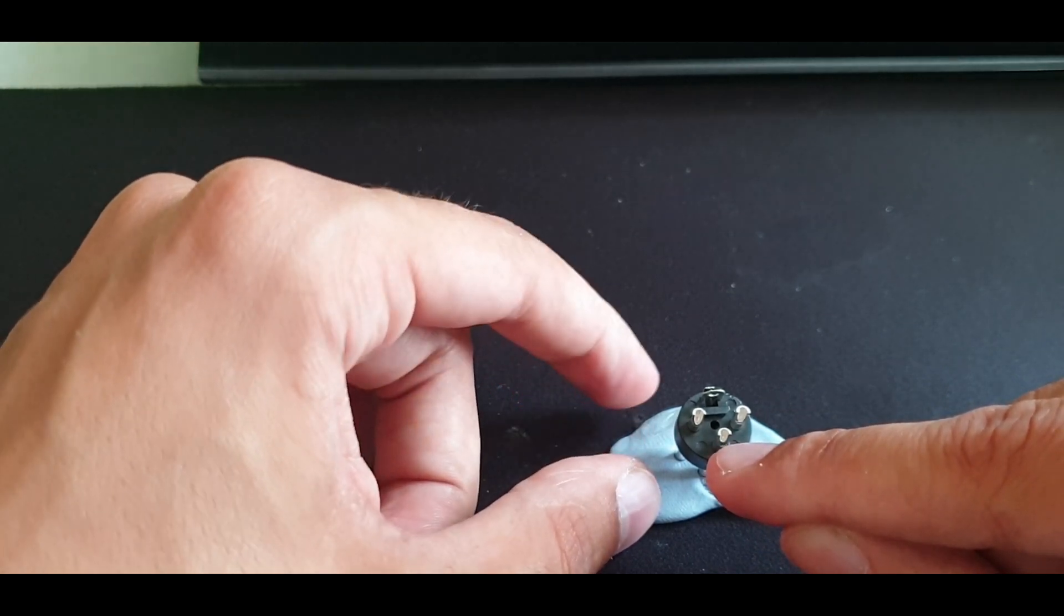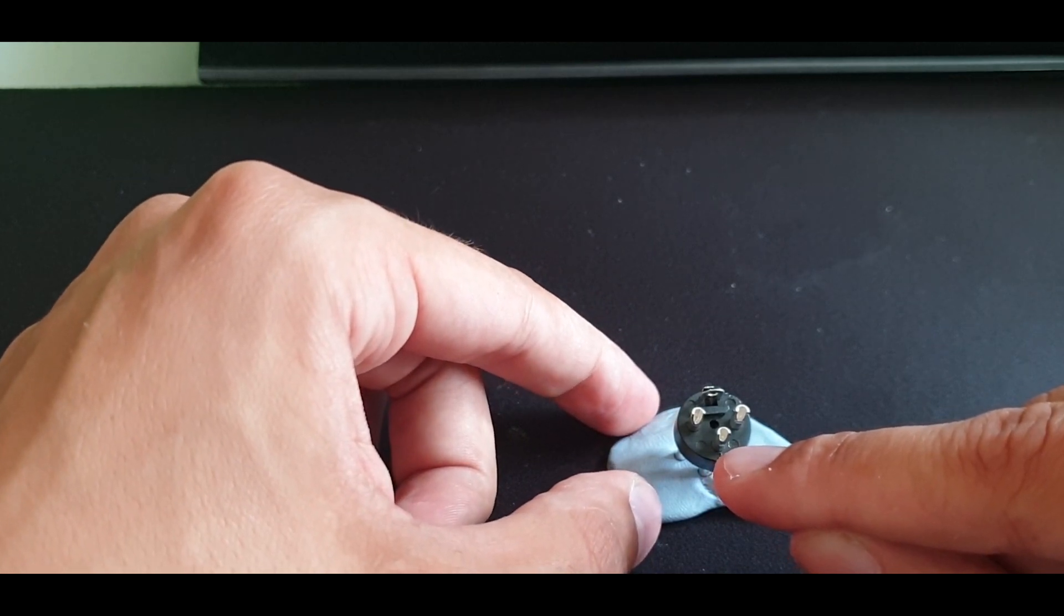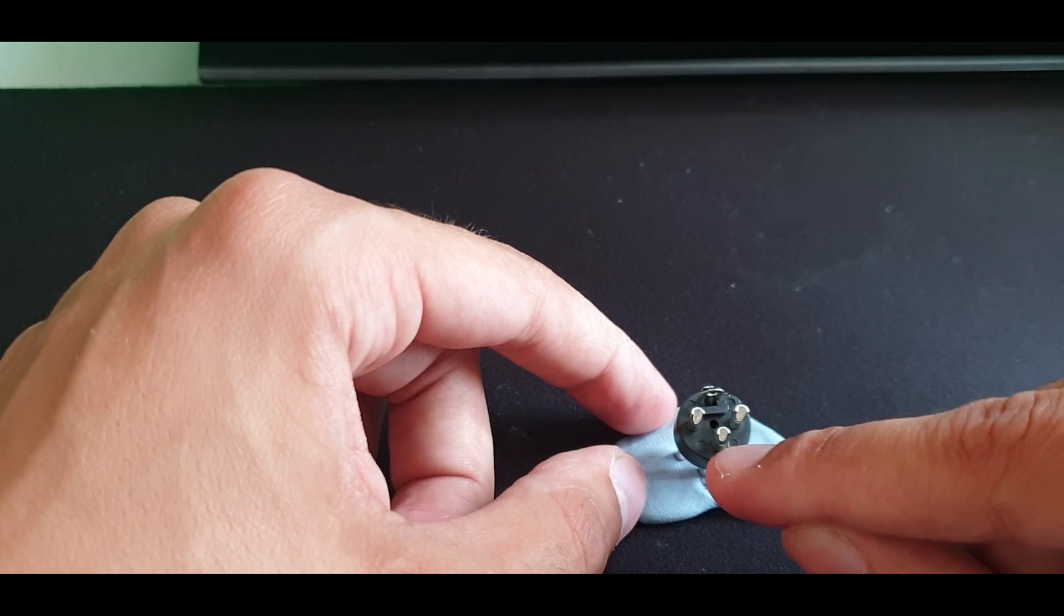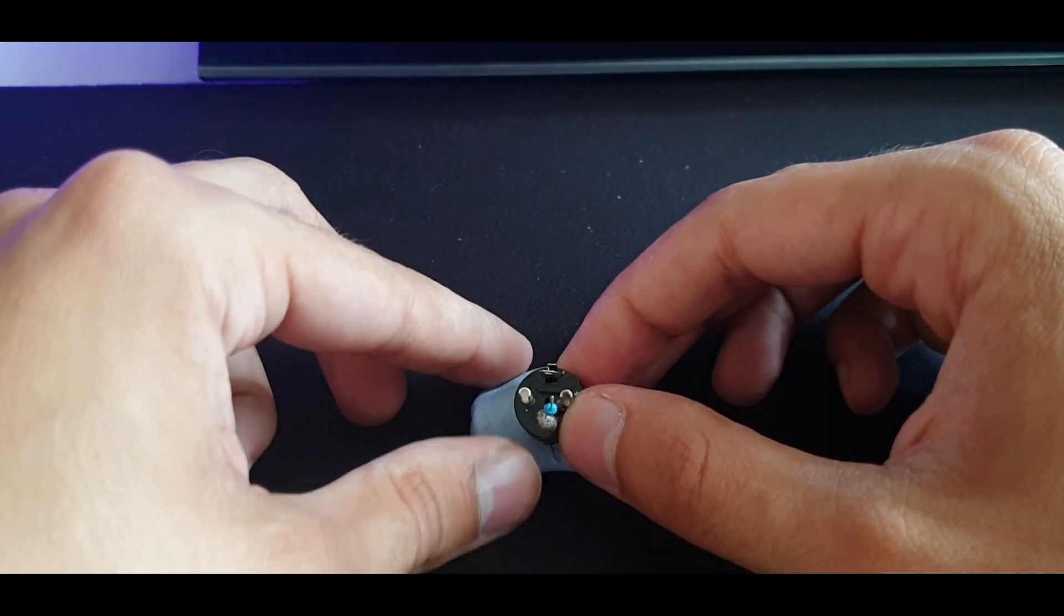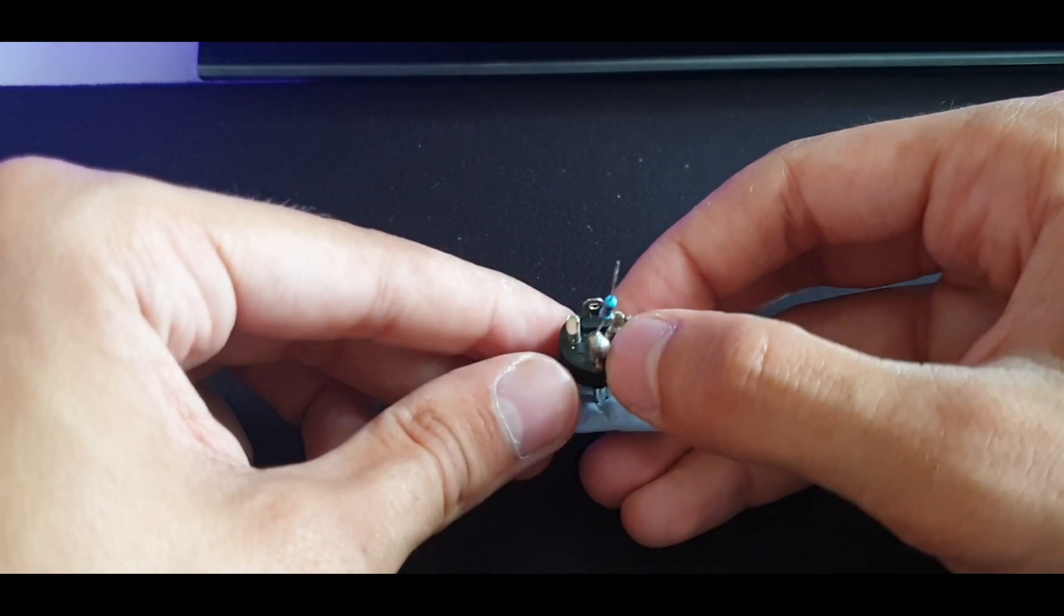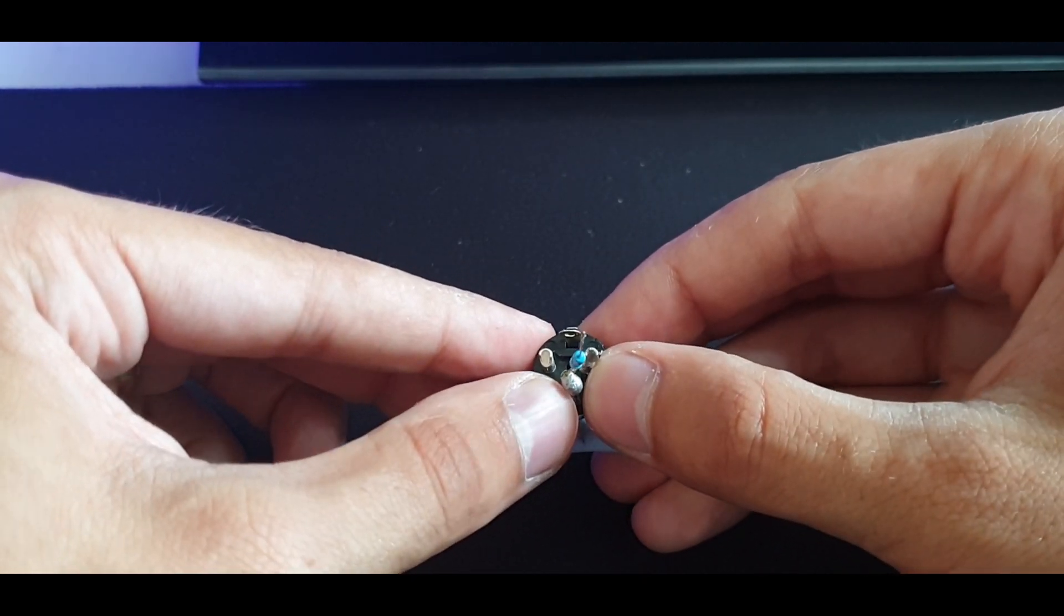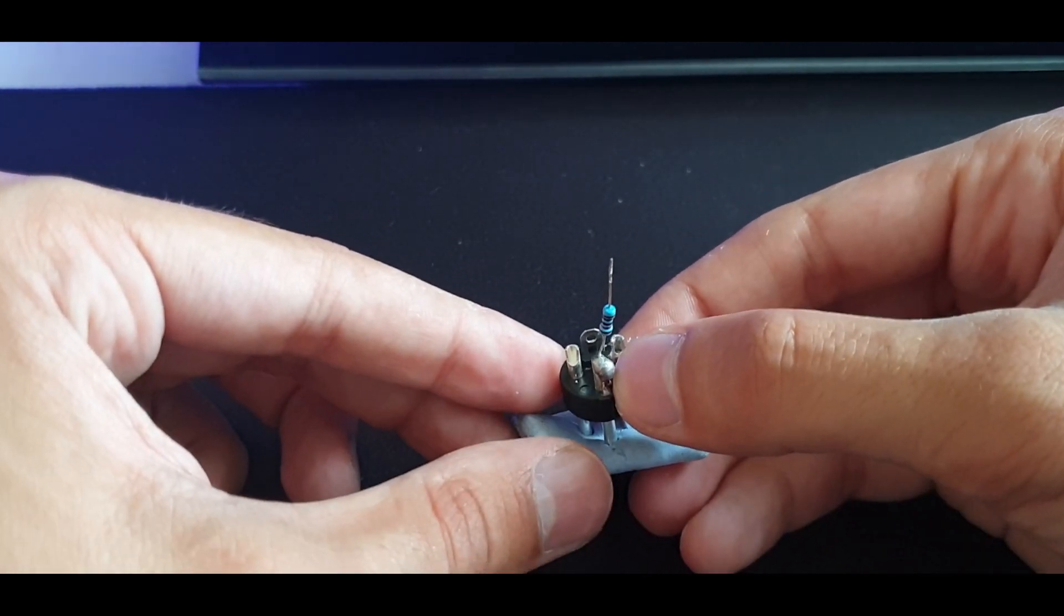So what we're going to need to do next is solder our 120 ohm resistor to pin number 3. Okay, so as you can see here, I have already soldered in the 120 ohm resistor into pin number 3, just down there, like so.